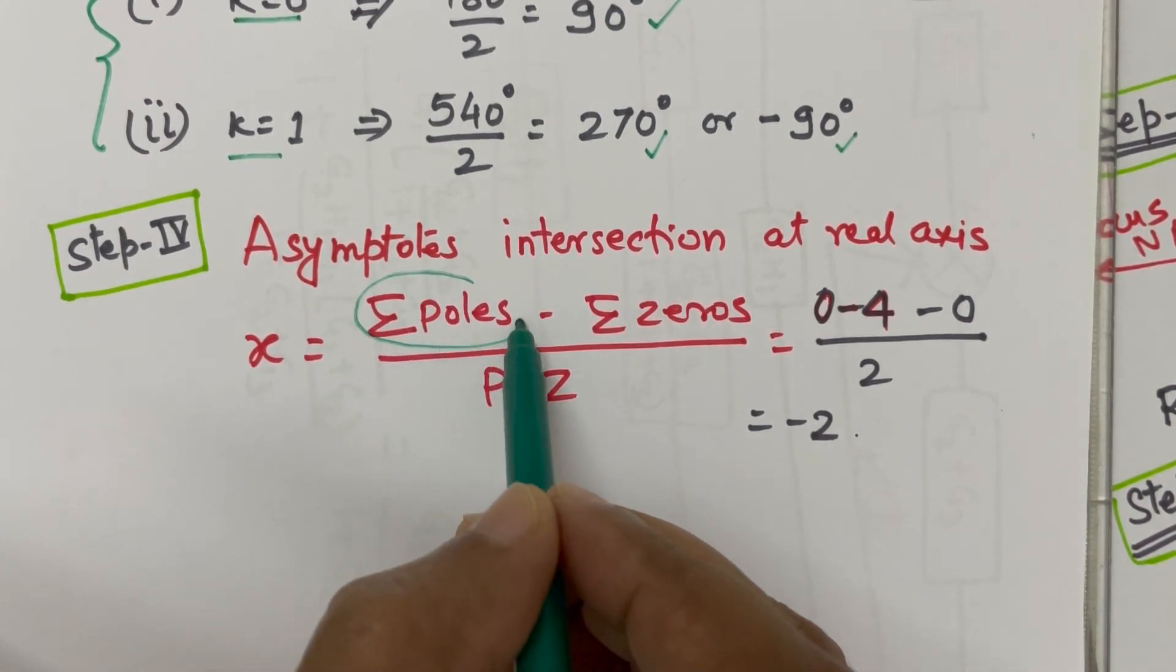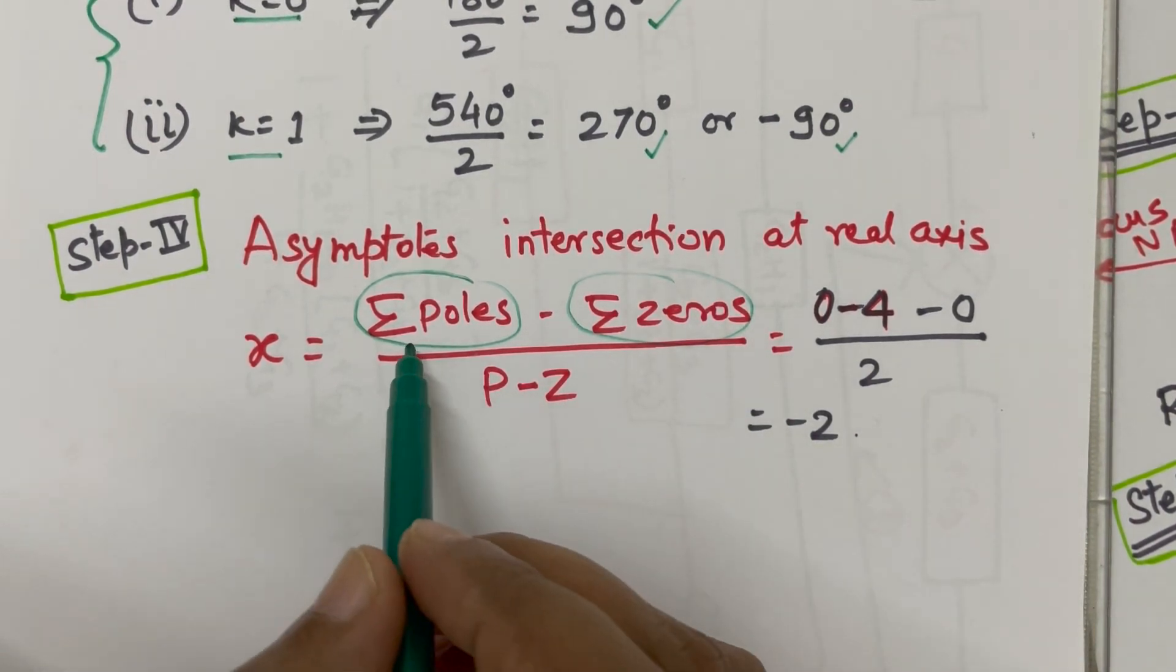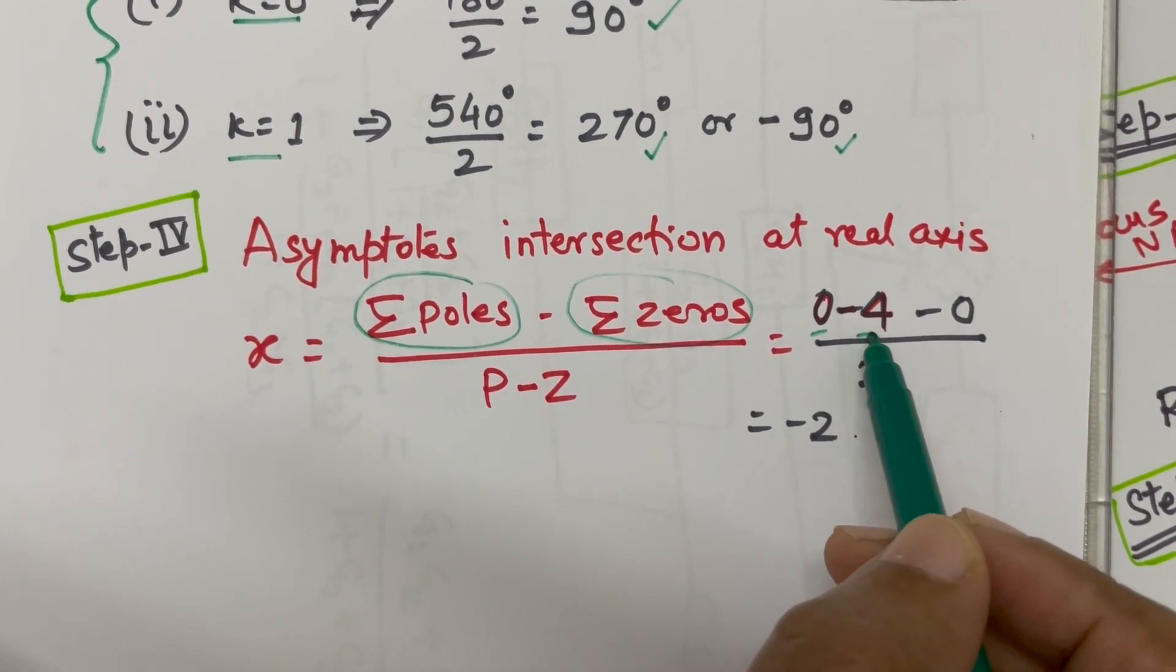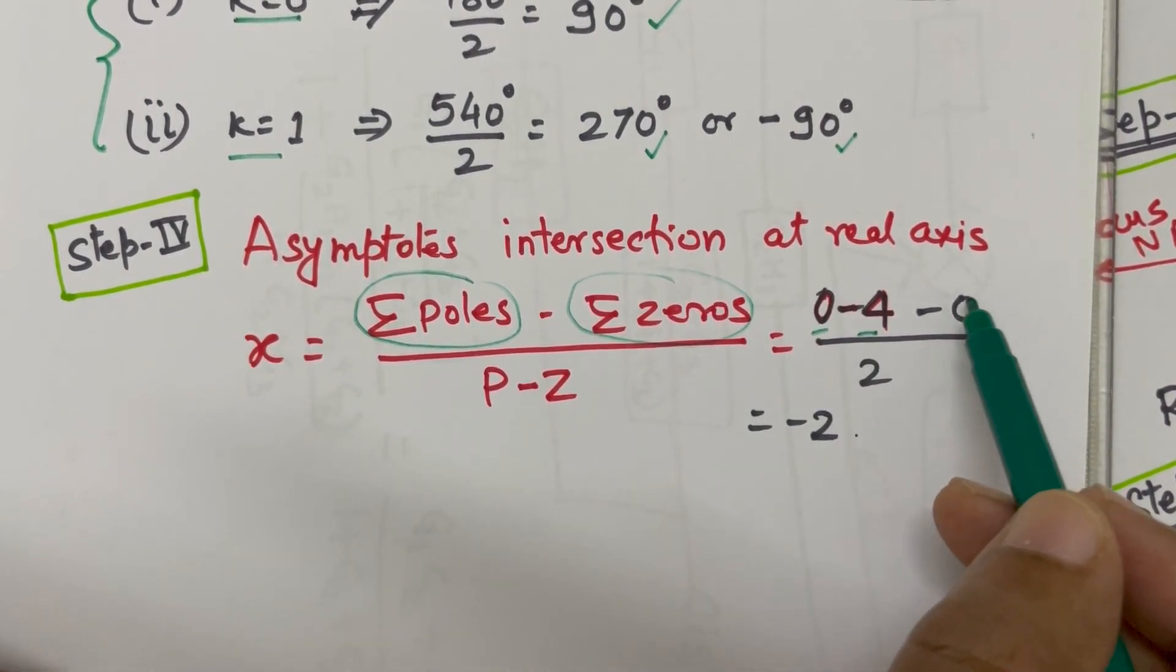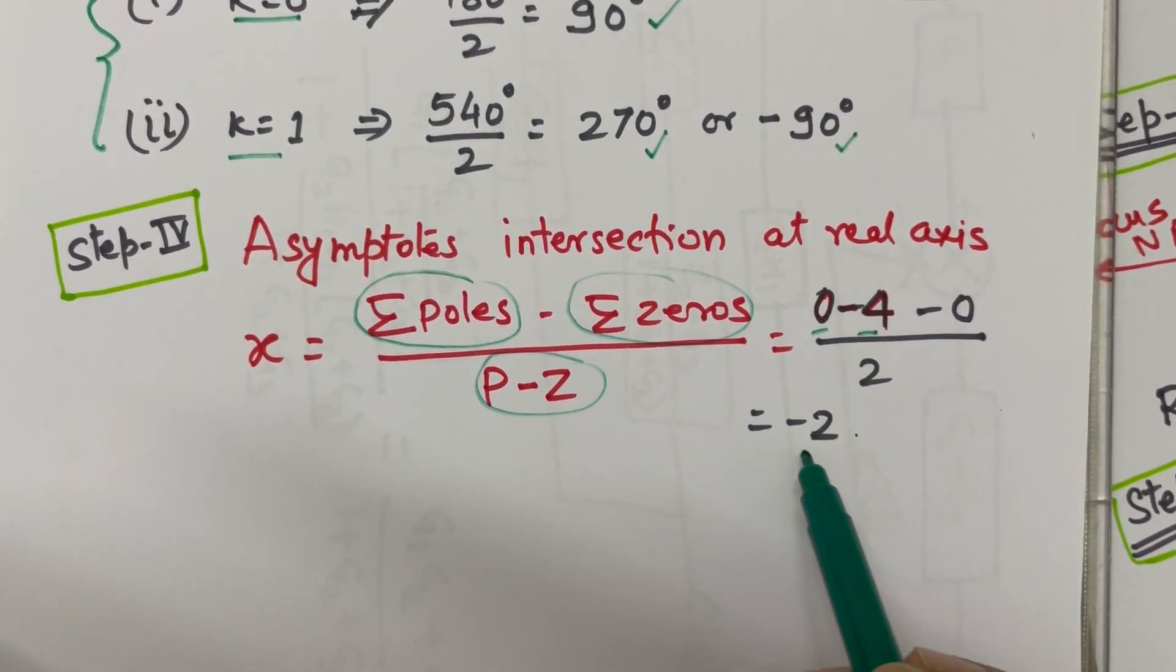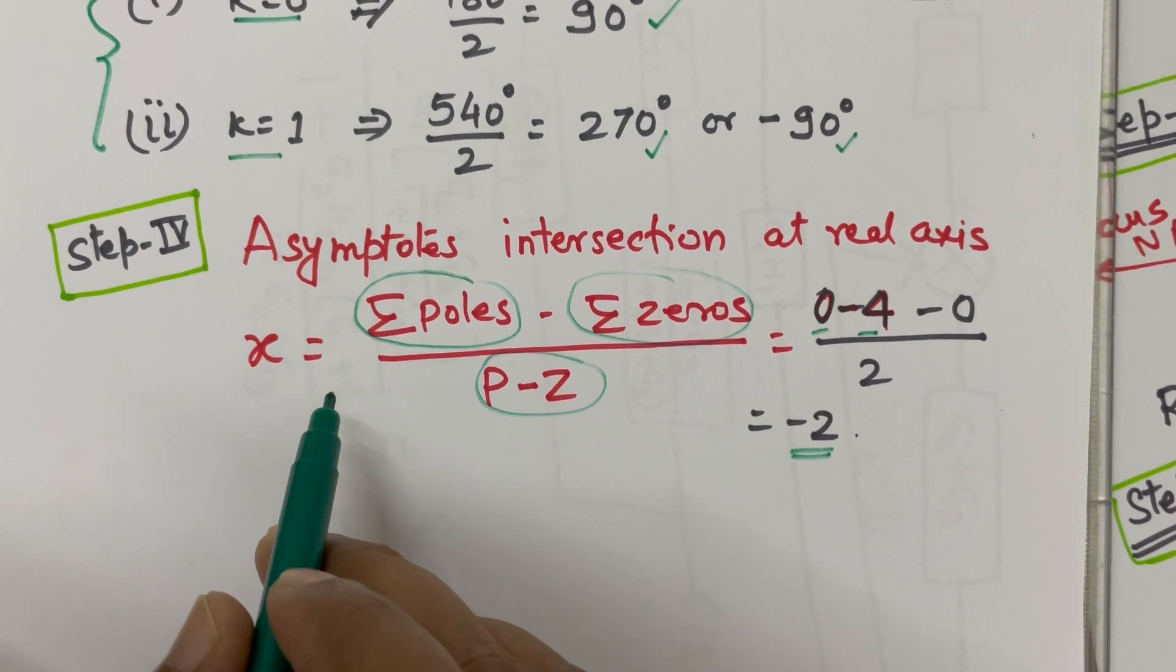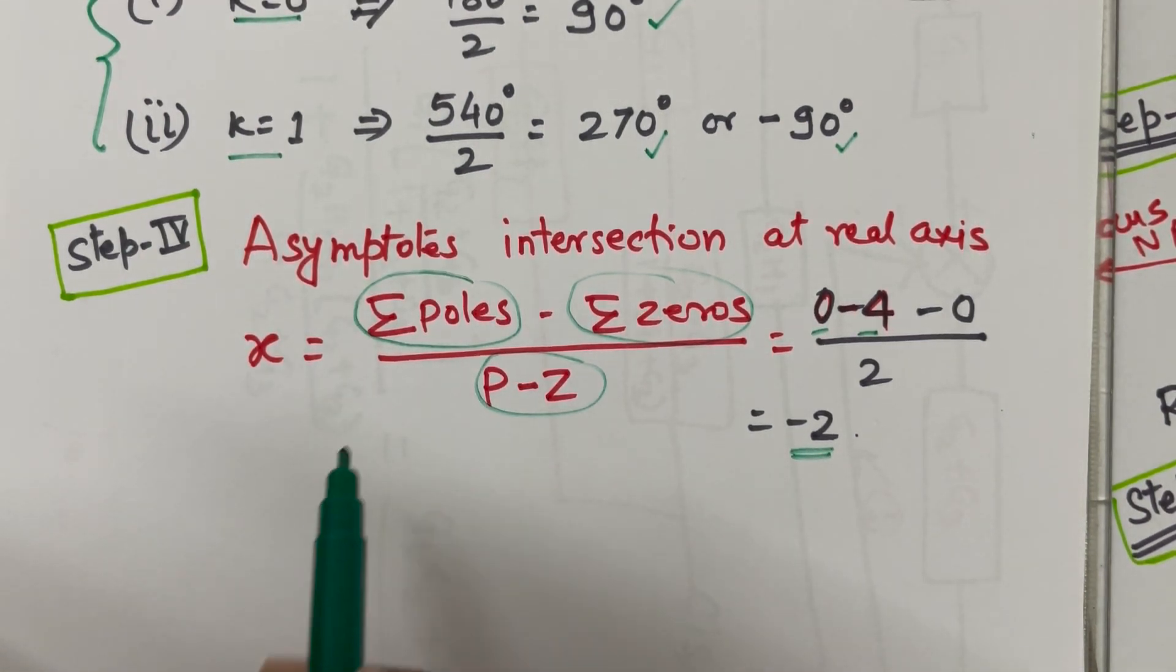Addition of all the poles minus addition of all the zeros. That is summation of poles is 0 is one pole minus 4 is another pole. So, that is summation is minus 4. There is no zero. So, 0 divided by difference of number of poles in 0. That is 2. So, minus 2. That means the asymptote will be drawn from the minus 2. It will be intersecting the real axis at minus 2.